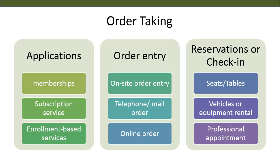Order taking can be split into three categories: applications, order entry, and reservations. Applications can be for club memberships, subscription services to mobile data plans, or enrollment into a university. Order entry — for example, at McDonald's, we can place our order in-store, call in for delivery, or order online for delivery. Reservations or check-in include reservations for seats in the theatre, tables in a restaurant, picking up a rental car, or making an appointment with a medical doctor. The process of order taking should be fast, free and convenient for customers.